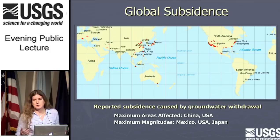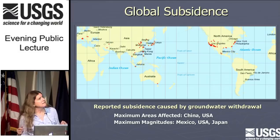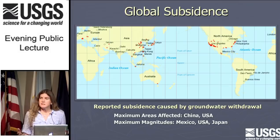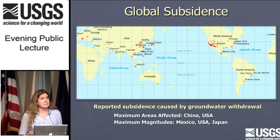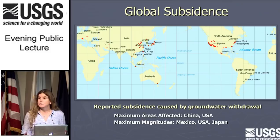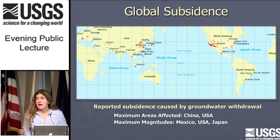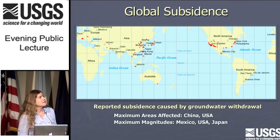I want to start with a world perspective of where subsidence is happening. This map shows a lot of locations in the United States and China. You don't see any dots in Africa or South America — one in Australia. The reason it's prevalent in the United States and China is because we have a lot of people. Rich countries use more resources than poor countries. We don't know if subsidence has happened in Africa or South America — we just don't have the data to support it.